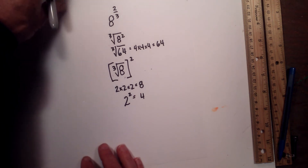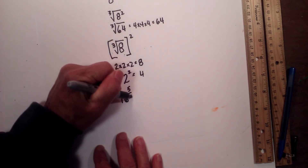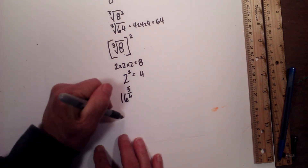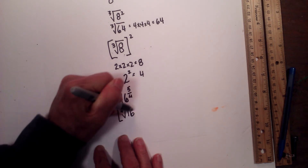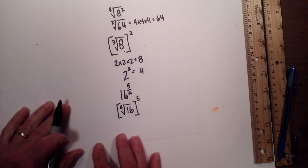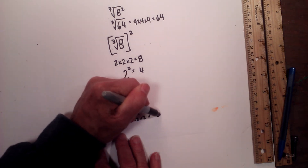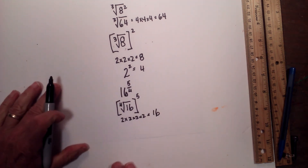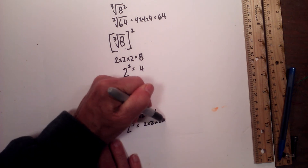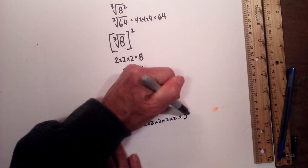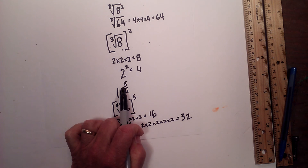I'm going to work one more example: 16 to the 5/4. I'll write the radical symbol — the radicand is 16 and the root index is 4. It's easier to solve it by finding the 4th root first and then raising to the 5th power. The 4th root of 16 is 2, since 2 times 2 times 2 times 2 equals 16. Then 2 to the 5th power is 2 times 2 times 2 times 2 times 2, which equals 32.